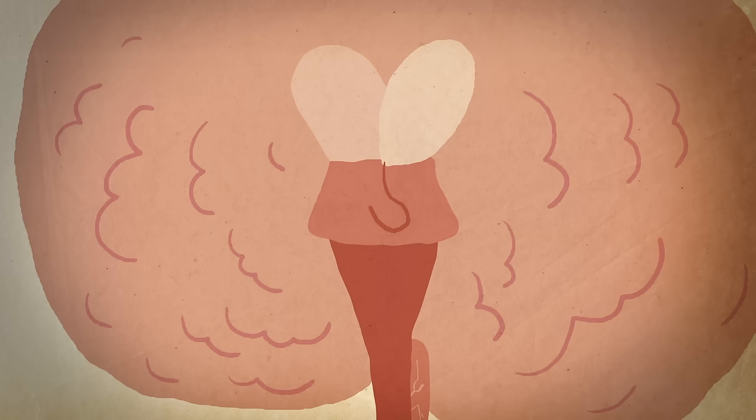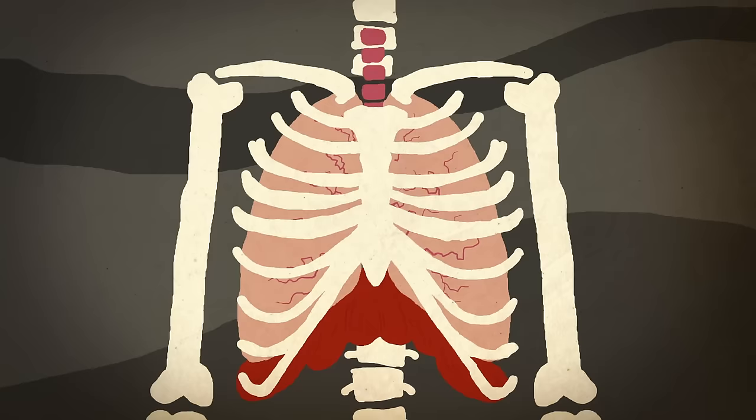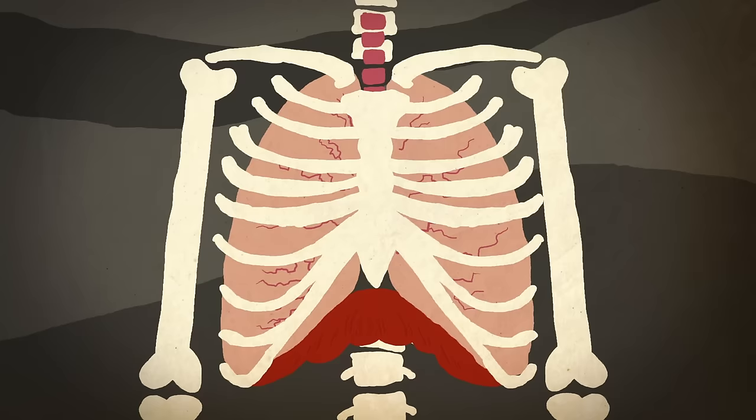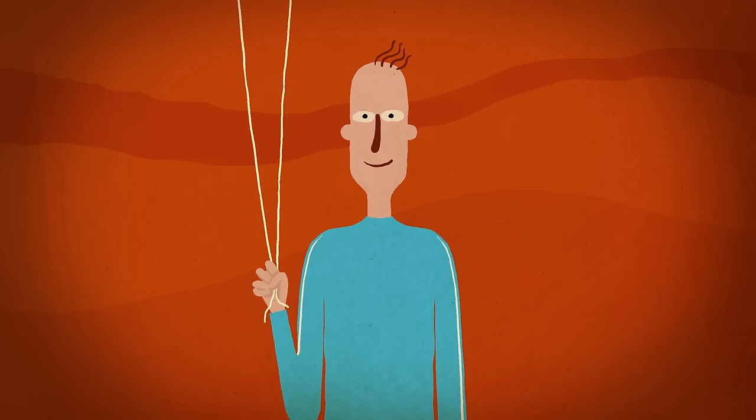But before oxygen can even reach the lungs, the brain needs to get involved. The brain stem initiates breathing by sending a message through your nervous system, all the way to muscles of the diaphragm and ribs. This causes them to contract, thus increasing the space inside the rib cage, which allows the lungs to expand.